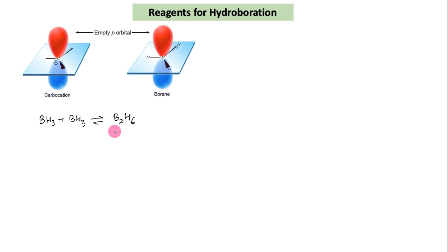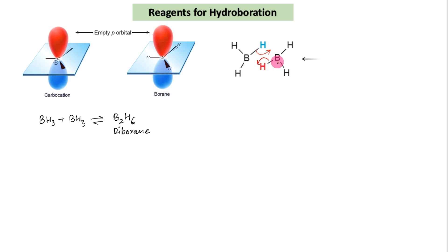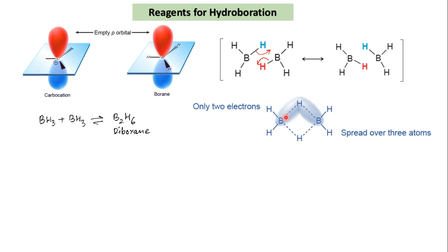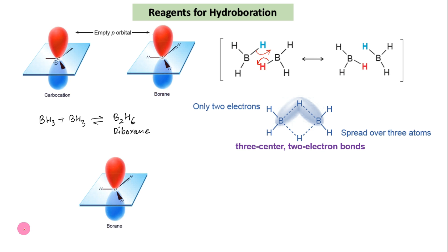This dimer is believed to possess a special type of bonding that can be more easily understood by drawing resonance structures. This is one of those rare cases where we break a single bond when drawing resonance structures. Each hydrogen atom is partially bonded to two boron atoms using a total of two electrons — such bonds are called three-center, two-electron bonds. Thus borane, BH₃, is a reactive gas that exists mostly as the dimer diborane, B₂H₆.